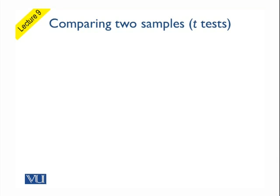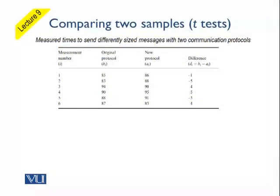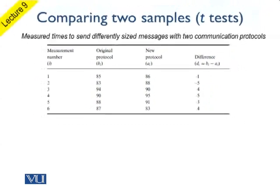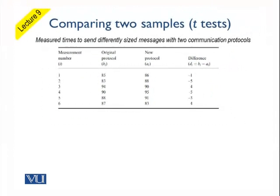This example was earlier covered in lecture 9 when we talked of confidence intervals. There we used confidence intervals, but now I am going to talk about the paired T-test. The idea is that we want to compare two protocols — the original and a modified protocol — to see which is better. Because there is a direct relationship between the readings, we call this a paired test. We send messages of different sizes and compare the readings for the same size for both protocols.